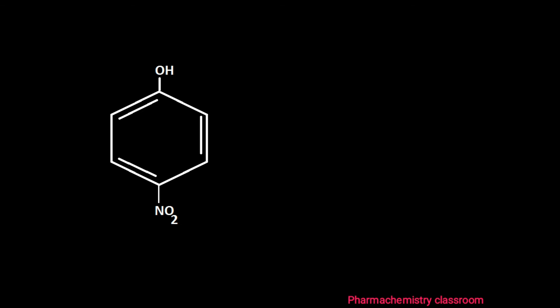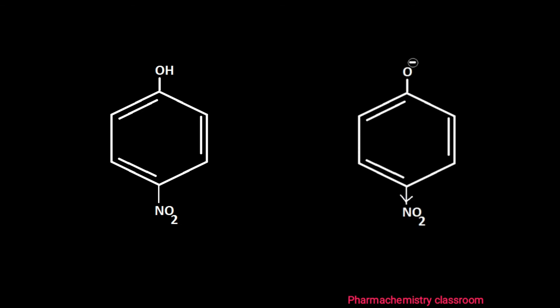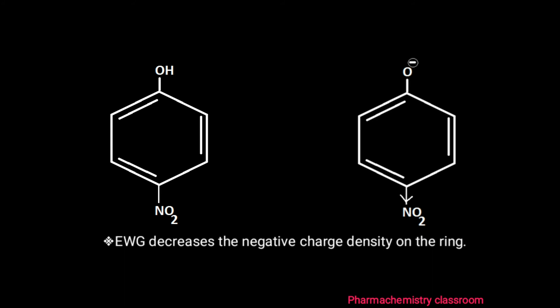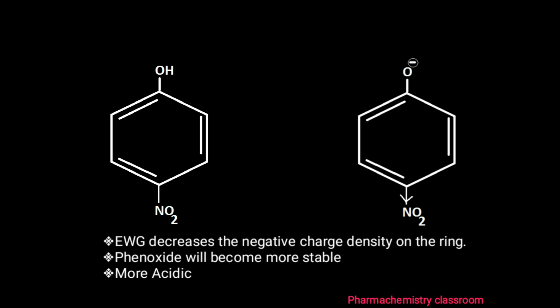When electron-withdrawing groups are present on phenol, they decrease the negative charge density on the ring. The phenoxide ion will be more stable, and because phenoxide ion stability influences the acidity of phenol, the substituted phenol will be more acidic. So when electron-withdrawing groups are attached to phenol, the negative charge density on the ring decreases, the phenoxide ion becomes more stable, and the phenol becomes more acidic.